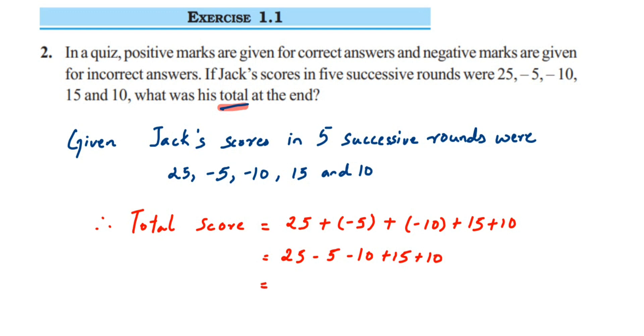Now what I'm going to do is add all the positive integers. So 25 + 15 + 10, when you do this you're going to get the answer 50. And now I'm going to add the negative integers. So -5 - 10, both have the same sign, so you have to add them and put the same sign. 5 + 10 is 15, and the sign will be negative.